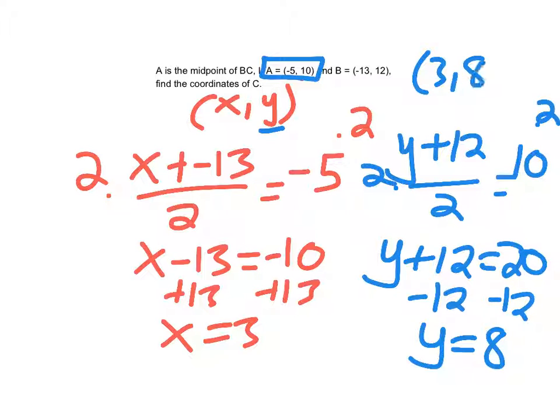And we could always check it. 3 plus negative 13 is negative 10. Divided by 2 is negative 5. 8 plus 12 is 20. Divided by 2 is 10.